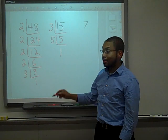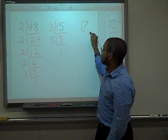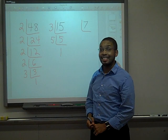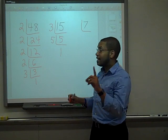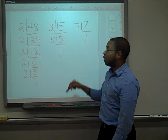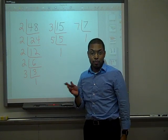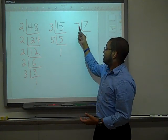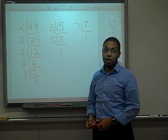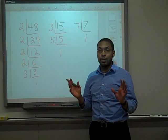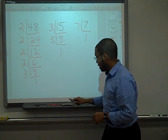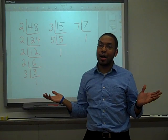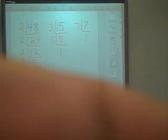For 7: can 2 go into 7? No. Can 3 go into 7? No. Can 5 go into 7? No. Can 7 go into 7? Yes — once. We're done. If you ever need to prime factor a prime number, you just take that number and multiply it by 1, because that's the only way to make it as a product. Hope you enjoyed this video — now you know how to prime factor!